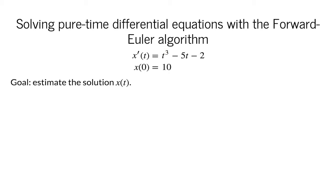The forward Euler algorithm is an algorithm to estimate the solution to differential equations. Let's illustrate how to use it to solve the pure time differential equation x prime of t equals t cubed minus 5t minus 2, with the initial condition that x of t is 10 at time t equals 0. Our goal is to estimate the solution x of t.